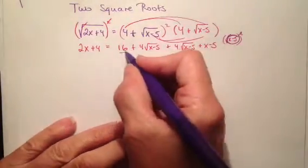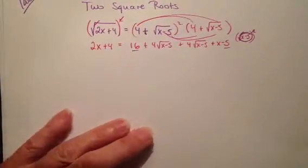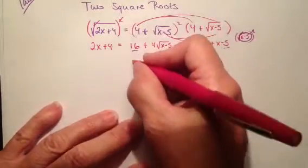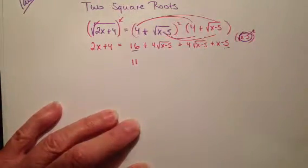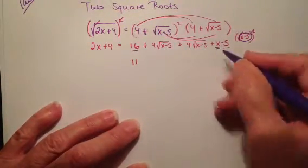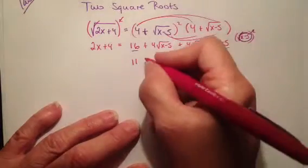Now I want to combine some like terms. I've got some numbers here I can combine. So 16 minus 5 is 11. This x right here, a lot of people lose this x. So be very careful. I've got a plus x.